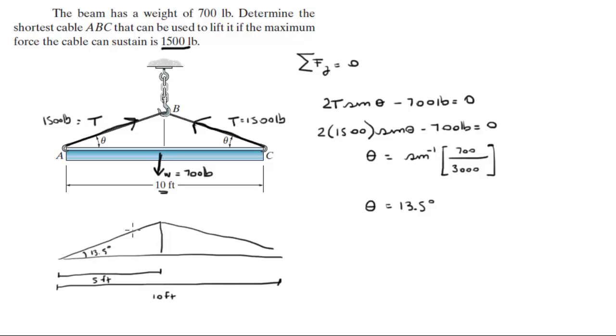And we're trying to find this length of this cable. So these are two right triangles if you put a line right in the middle. They actually give you the line right here. So let's call this L over 2, and the whole length of the cable will be L. So you know that L over 2 times the cosine of 13.5 degrees is equal to 5 feet.